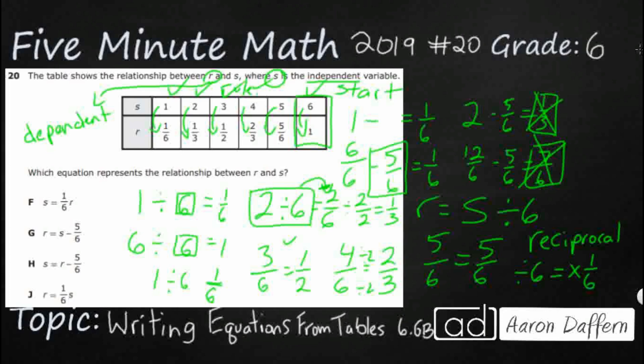So what we're going to do is we're going to take our r. So we're going to start with our r, or that's going to be our answer. We're going to multiply s by one sixth, and we're going to get it, and our answer is J.